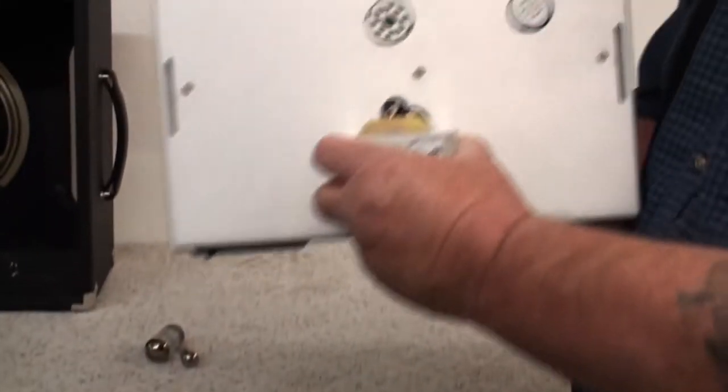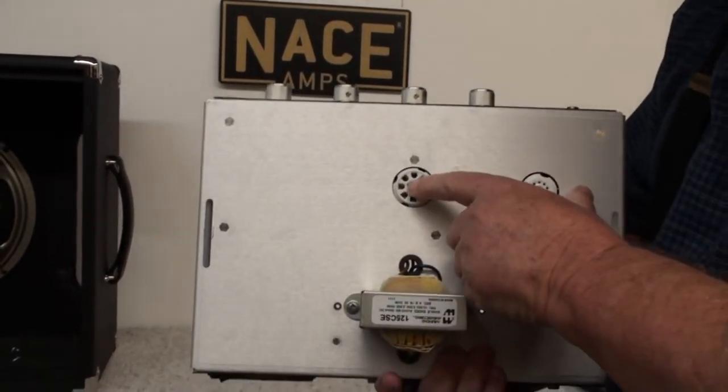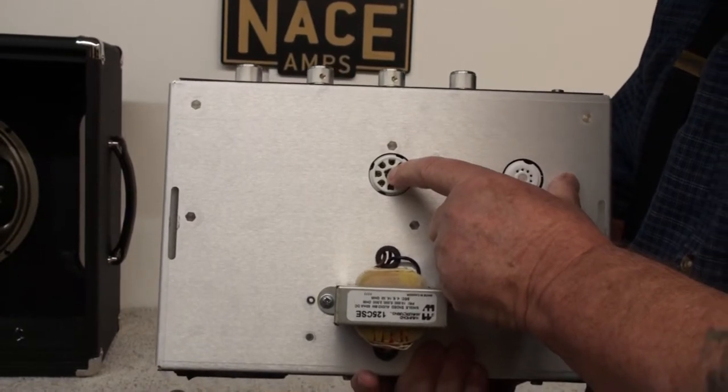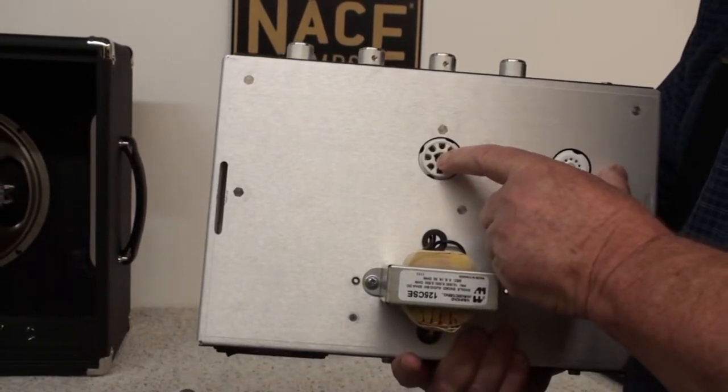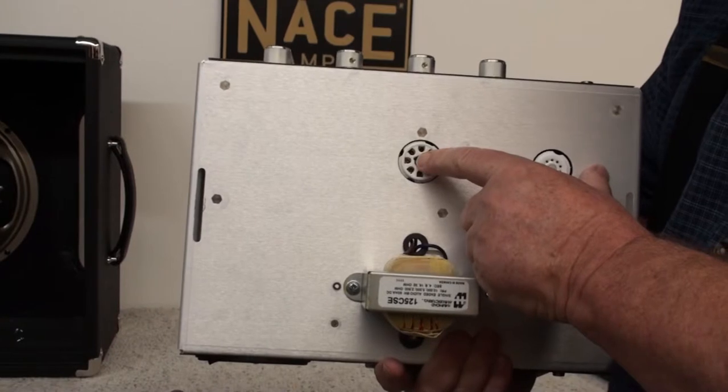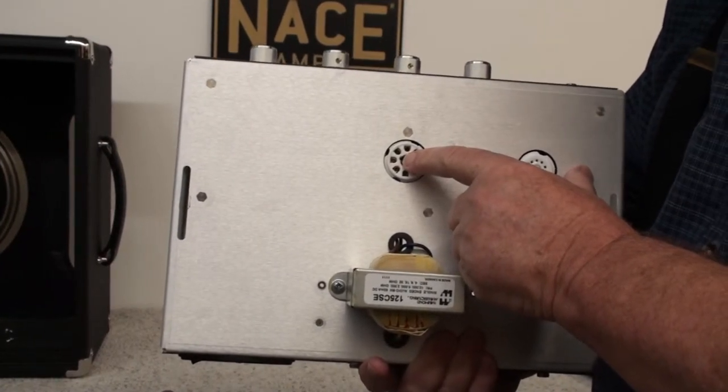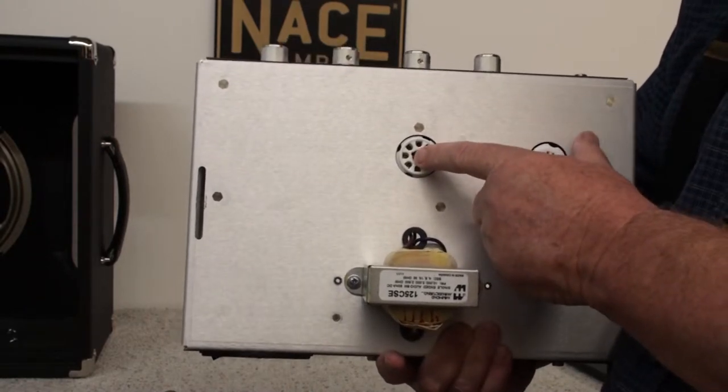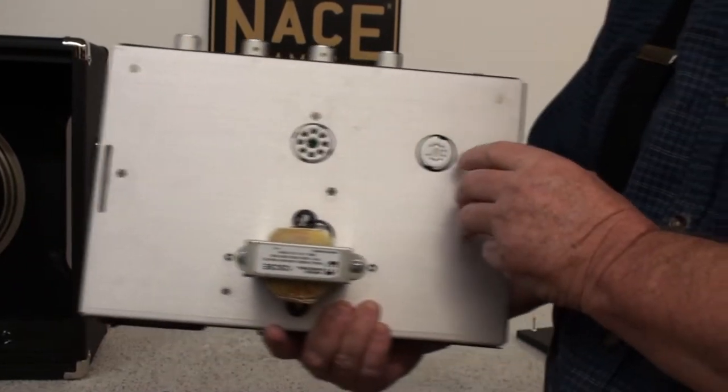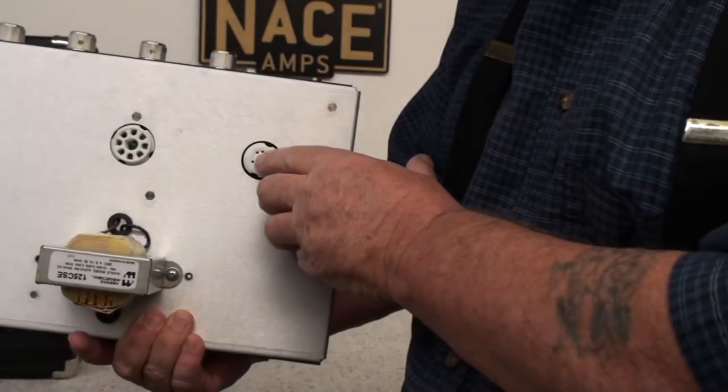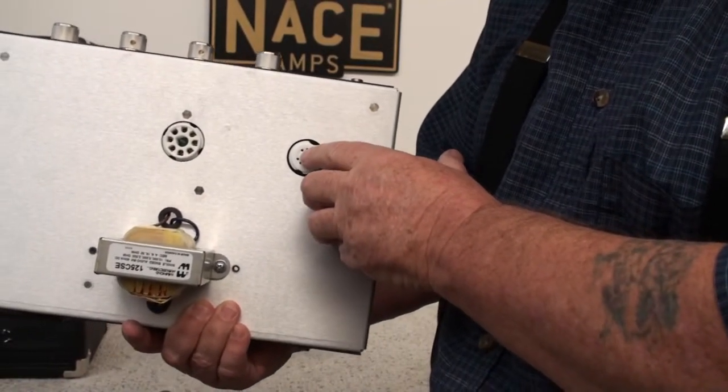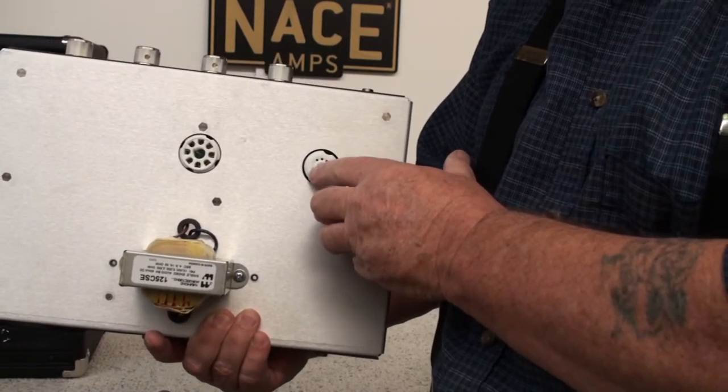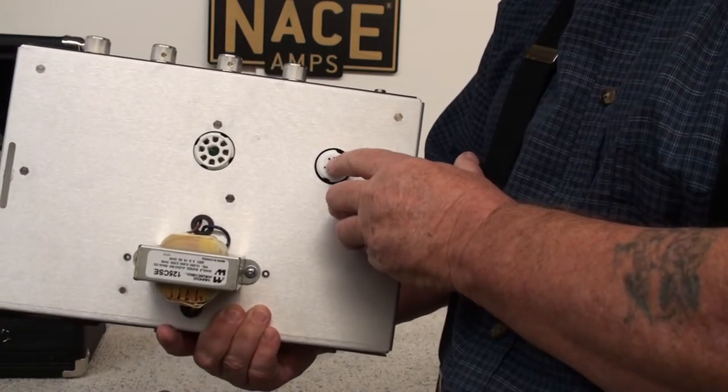Now as you can see in the tube socket, on the power tube there is a key right here. We have to make sure that the power tube key lines up with that. Otherwise it's possible to break off the key from the power tube and it gets stuck in here and that causes other problems. The small tube, it's not keyed but the pins, there's a missing pin right here. So it's phased so it only goes in one way. It's keyed but only because there's a missing pin here.